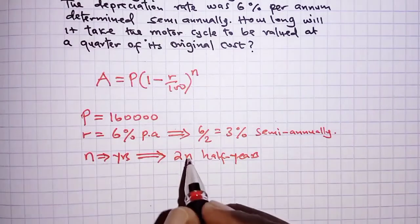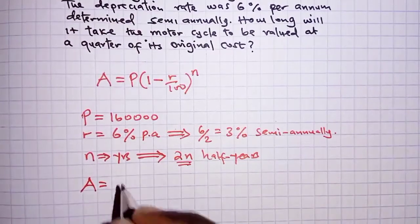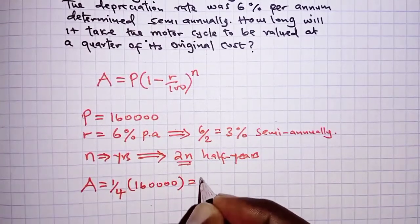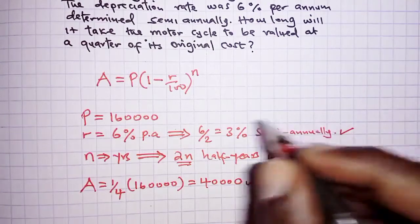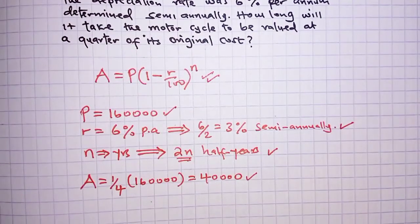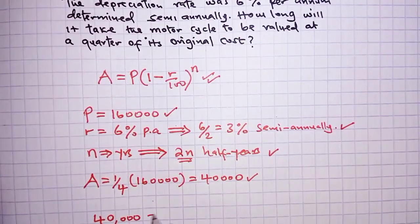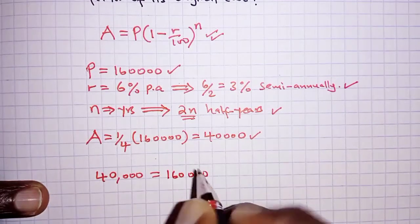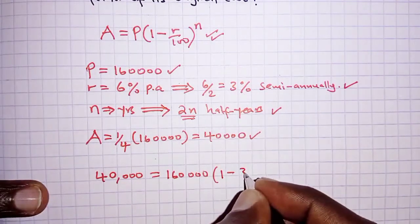The value of the motorcycle will be a quarter of its original cost, so the amount will be a quarter of 160,000, which is 40,000 shillings. Now with these values we do our substitution in the formula: Amount is 40,000, so 40,000 is equal to the principal, which is 160,000.